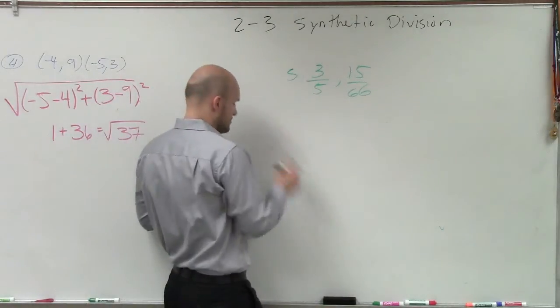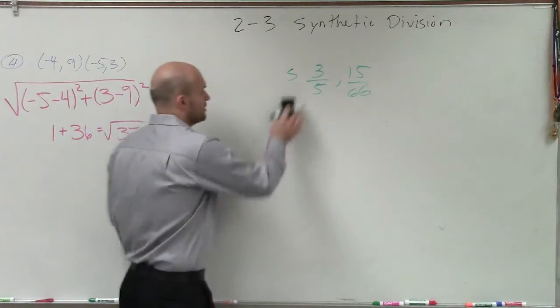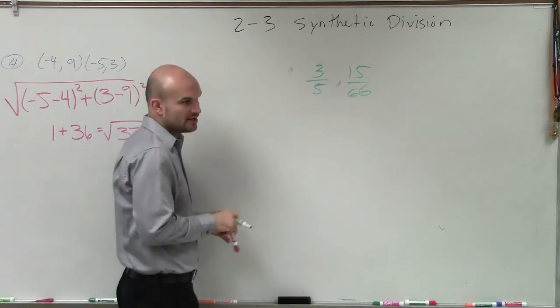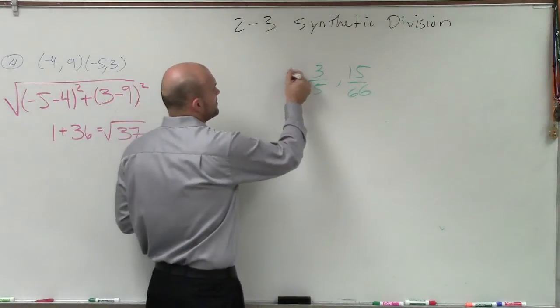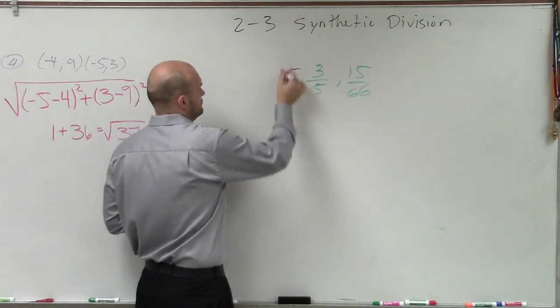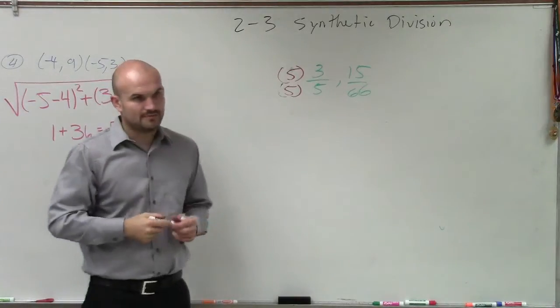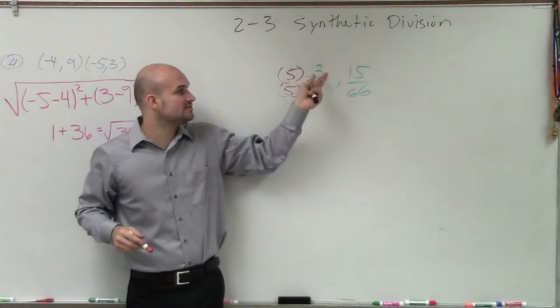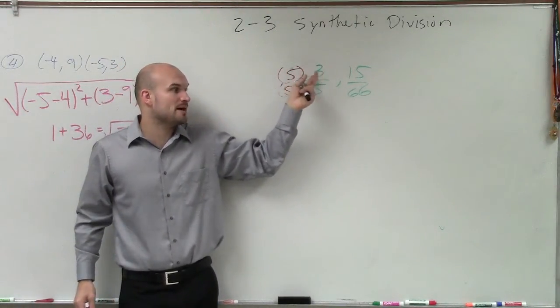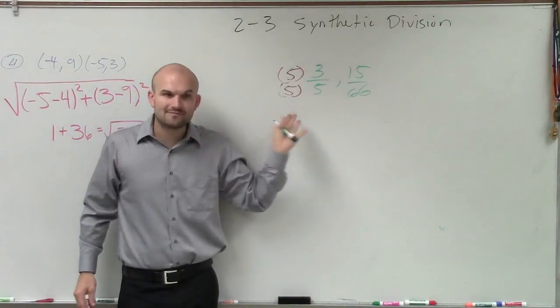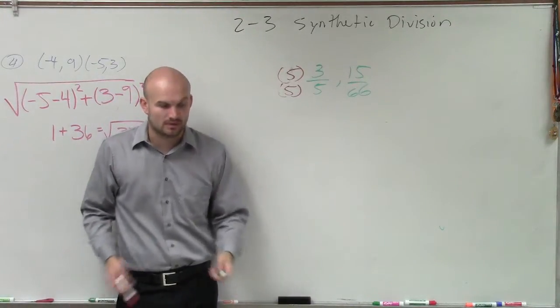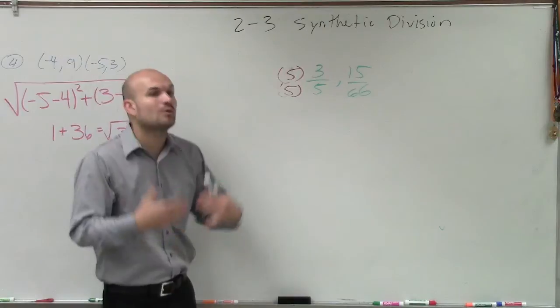So we multiply though by the same number. You cannot multiply by different numbers. You have to multiply by the same number. So if you say it takes five to multiply by three to give you fifteen, then you have to multiply by five on the denominator as well. Because then you're going to produce an equivalent ratio.